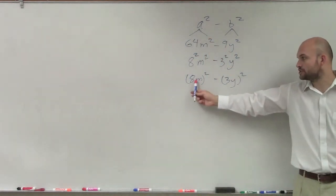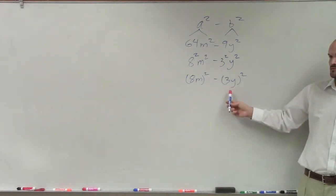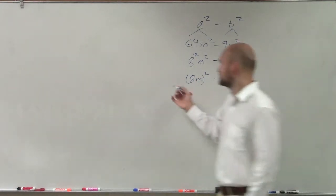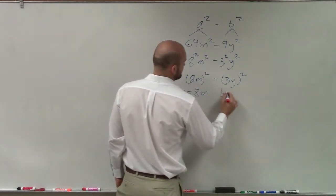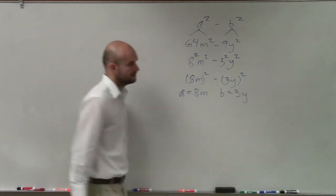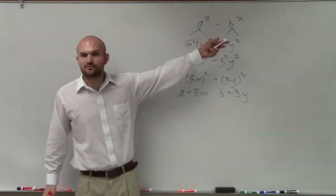Do you now see how it's a term squared minus another term squared? Where you can actually say a equals 8m and b equals 3y. Here, you're just going to replace it for this form.